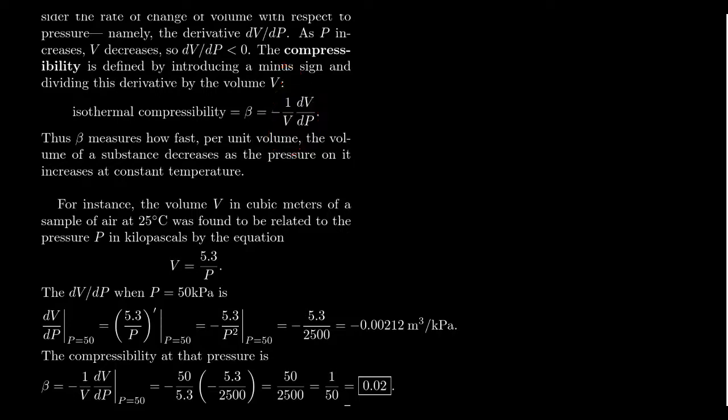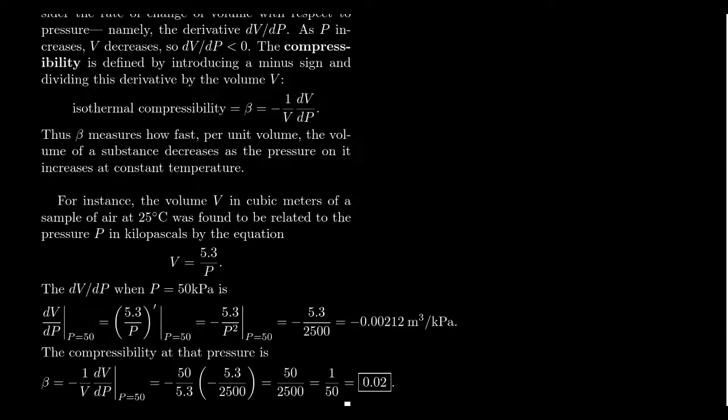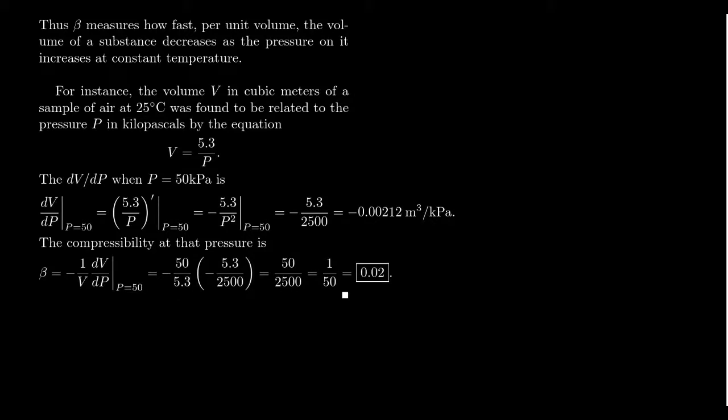So let's look at a, for instance. So for instance, the volume V in cubic meters of a sample of air, if we keep it at 25 degrees Celsius, which is a normal temperature for air to be here on planet earth. Let's say that's found. Let me read that again. The volume V in cubic meters of a sample of air at 25 degrees Celsius was found to be related to the pressure in kilopascals by the following equation.